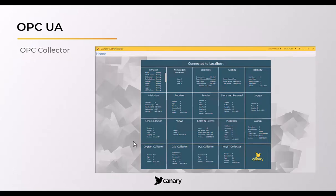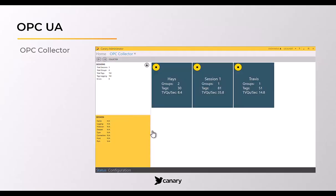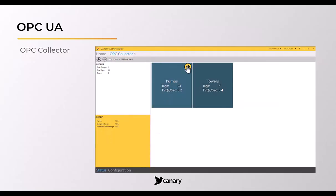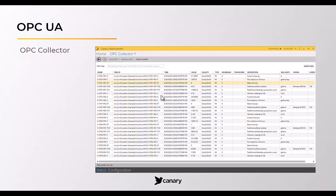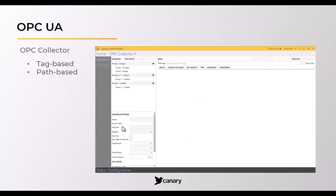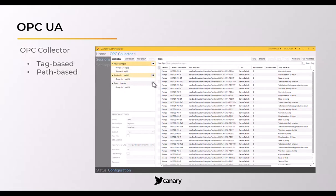The OPC collector is found in the Canary Admin and is used to connect to an OPC UA server. Logging sessions can be tag-based, where users can browse for specific tags within the server, or path-based, where they can subscribe to one or more branches in the server and log the tags under those branches.